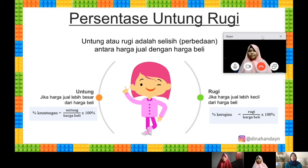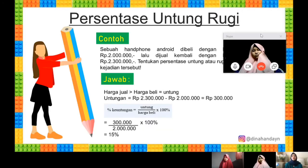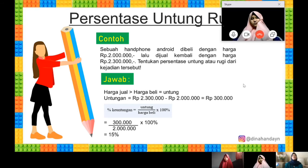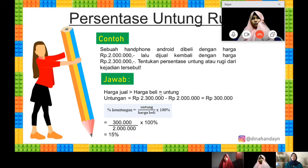Selanjutnya masuk ke persentase untung rugi. Untung atau rugi adalah selisih atau perbedaan antara harga jual dengan harga beli. Contoh soal: sebuah handphone Android dibeli dengan harga Rp2.000.000, kemudian dijual kembali dengan harga Rp2.300.000. Tentukan persentase untung atau rugi dari kejadian tersebut. Di sini kita membandingkan harga jual dengan harga beli. Karena harga jual Rp2.300.000 lebih besar dari harga beli Rp2.000.000, maka kejadian ini disebut untung.